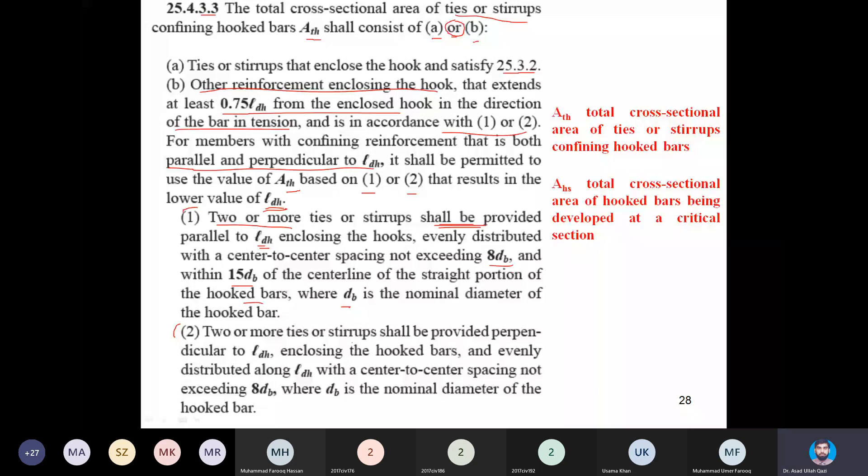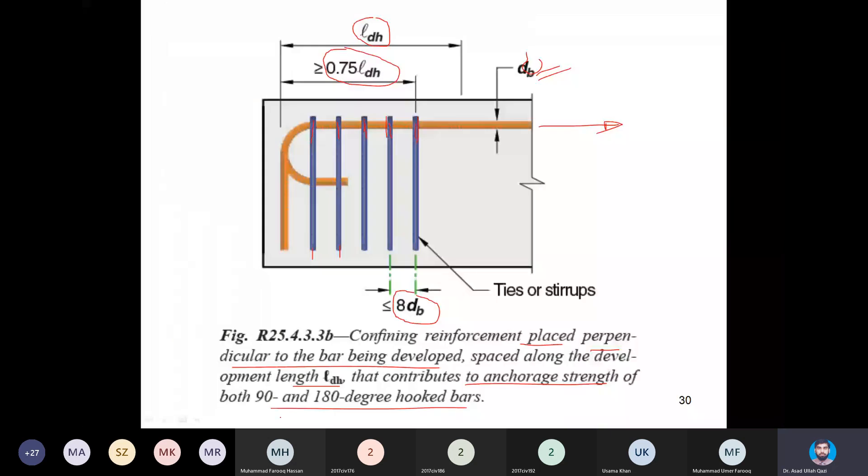Second is two or more - again two or more ties - shall be provided with center to center spacing not exceeding 8 dB. Everything is picturized here. Two or more ties. Look at the 180 degree bend - two ties are fulfilling that requirement. But furthermore, for 90 degree bend, we have five ties which are accumulated in this picture within 75% of LDH.